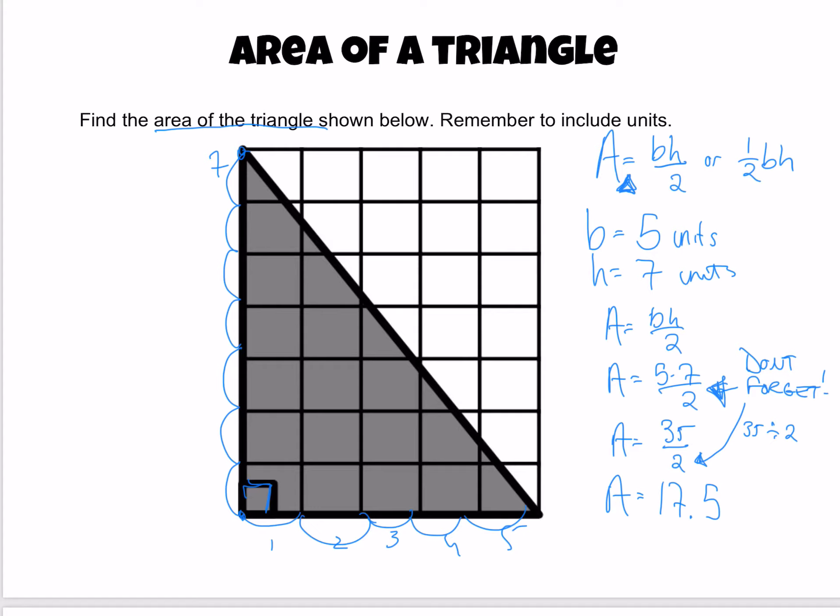And here our units are going to be square units. You can also write this as 17 and 5 tenths units squared or squared units. So you could also have 17.5 square units.